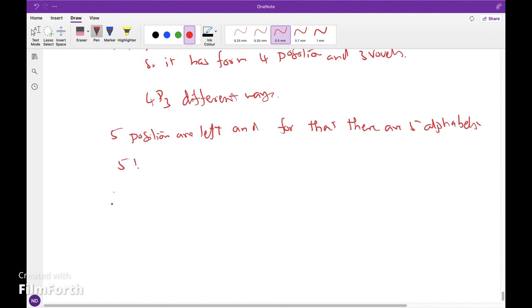So the number of words formed equals 4P3 × 5 factorial. 4P3 is 4 × 3 × 2, and 5 factorial is 120. The answer is 2880.